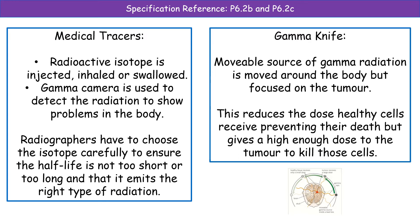The second use is the gamma knife, which is used to treat cancer. We use a movable source of gamma radiation on a fixed track, and we move it around the body so it's always focused on the tumour. By moving it, the healthy tissue does not get a high dose. So the tumour gets a high enough dose to kill it, while the healthy cells surrounding it get a lower dose and therefore shouldn't be killed.